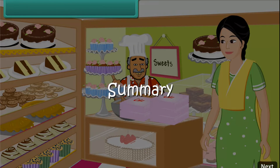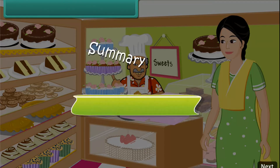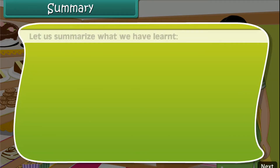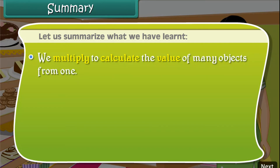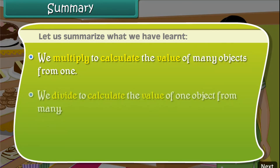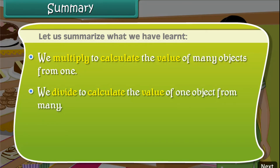Summary. Let us summarize what we have learned. We multiply to calculate the value of many objects from one. We divide to calculate the value of one object from many.